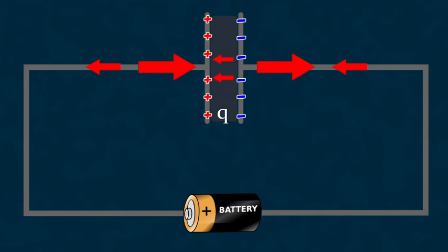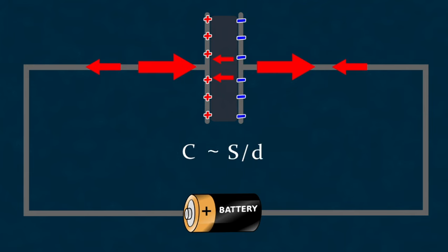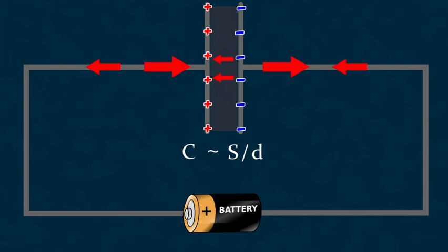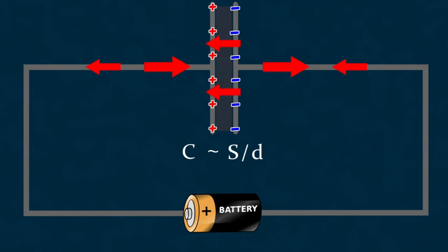It's not difficult to understand that the amount of charge a capacitor can store depends on the voltage of the source used to charge it. The higher the voltage, the more charge we can move. The proportionality constant that determines how much charge we can accumulate on the plates of a given capacitor at a given voltage is called the capacitance of the capacitor. Clearly, the capacitance will be directly proportional to the area of the plates and inversely proportional to the distance between them. The larger the plates, the lower the concentration of additional electrons, meaning the greater the average distance between them, and therefore the weaker the repulsive force that impedes the transfer of new electrons to the plates.